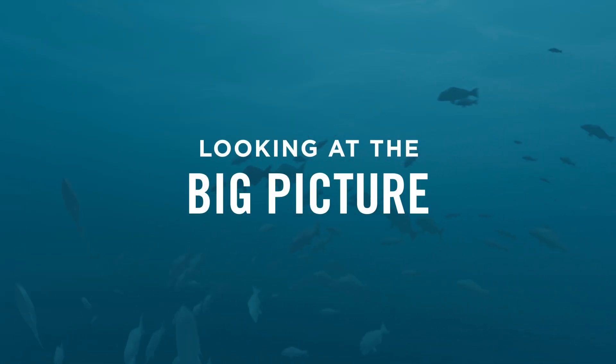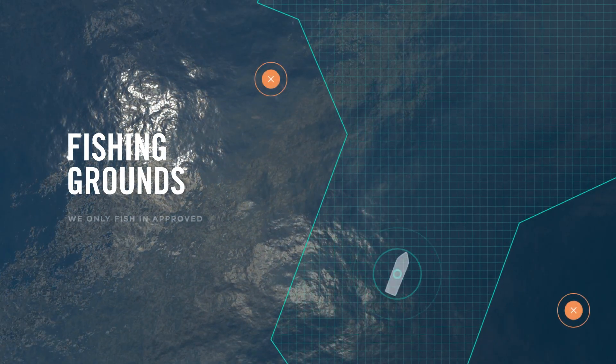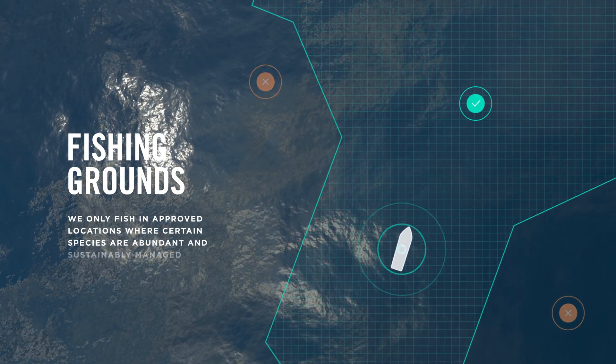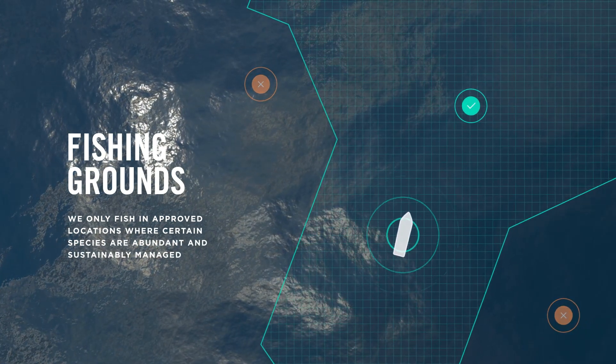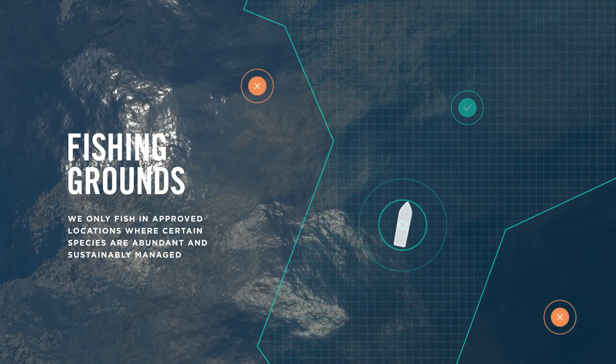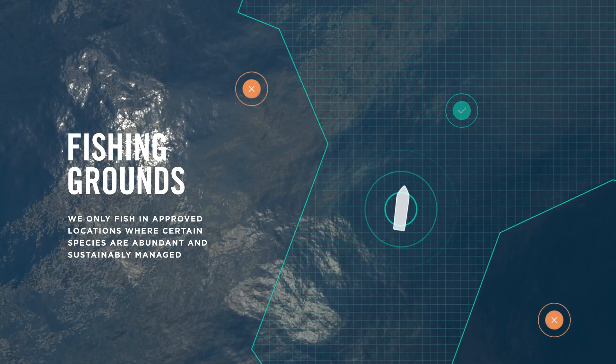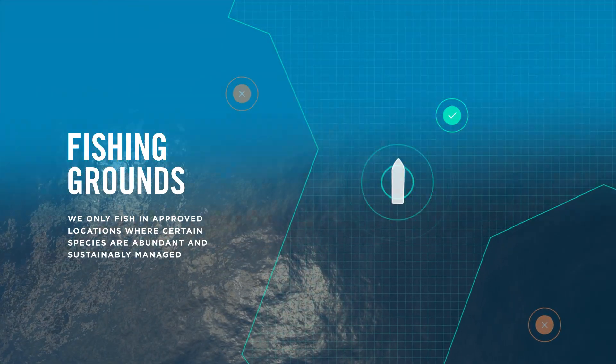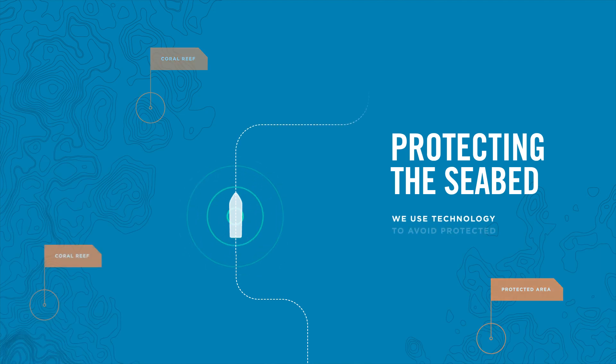Beyond our nets, there are other ways we ensure we're fishing sustainably and protecting sensitive marine environments. Where we fish plays a part. We only ever fish in approved locations where we know certain fish species are abundant and sustainably managed. And we typically return to the same grounds each season, which minimises the effects of bottom trawling to controlled areas. We're proud to use technology and stringent reporting to be as efficient and low-impact as possible in this environment.